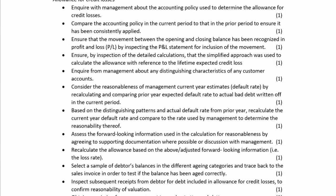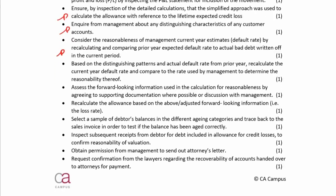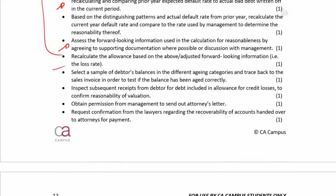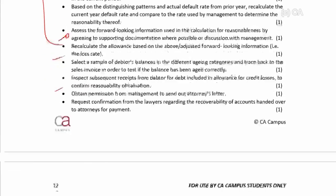Because they discussed using IFRS 9, you need to break up your testing to test IFRS 9 specifically: did they use the simplified approach, what characteristics were used to group the different debtors into the matrix, and then testing the rates by looking at prior actual write-offs compared to the allowance raised in the previous year to check if they are reasonable in their estimation. Look at the forward-looking information they used, then recalculate - having tested all the components - and consider whether any subsequent information helps you.